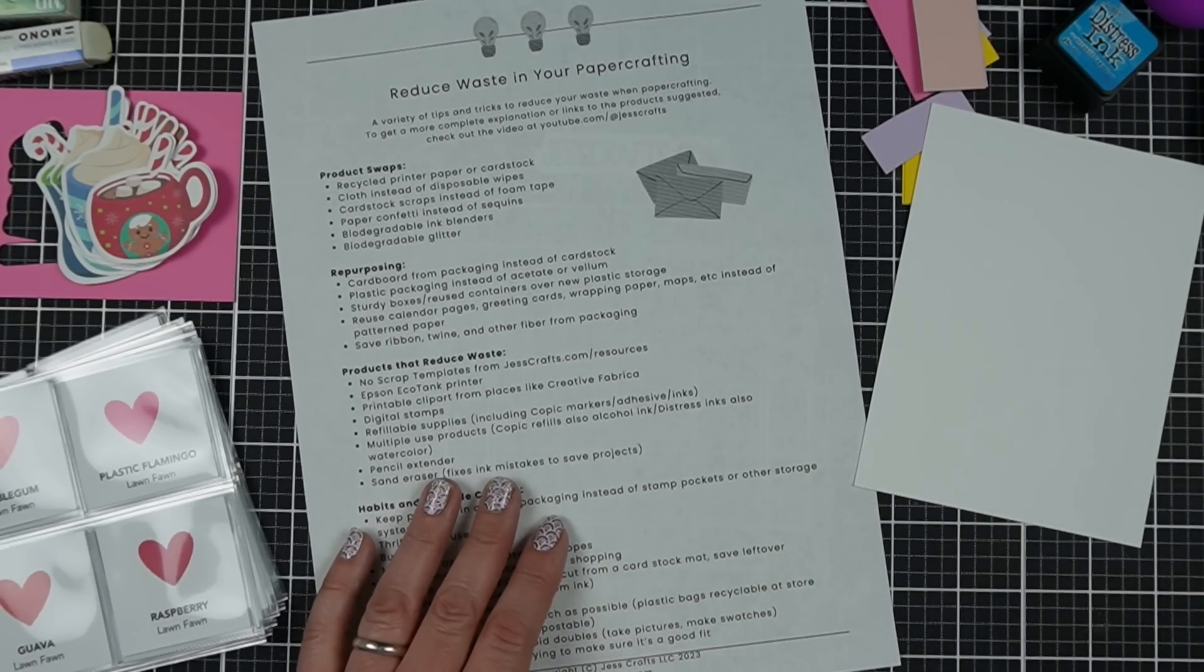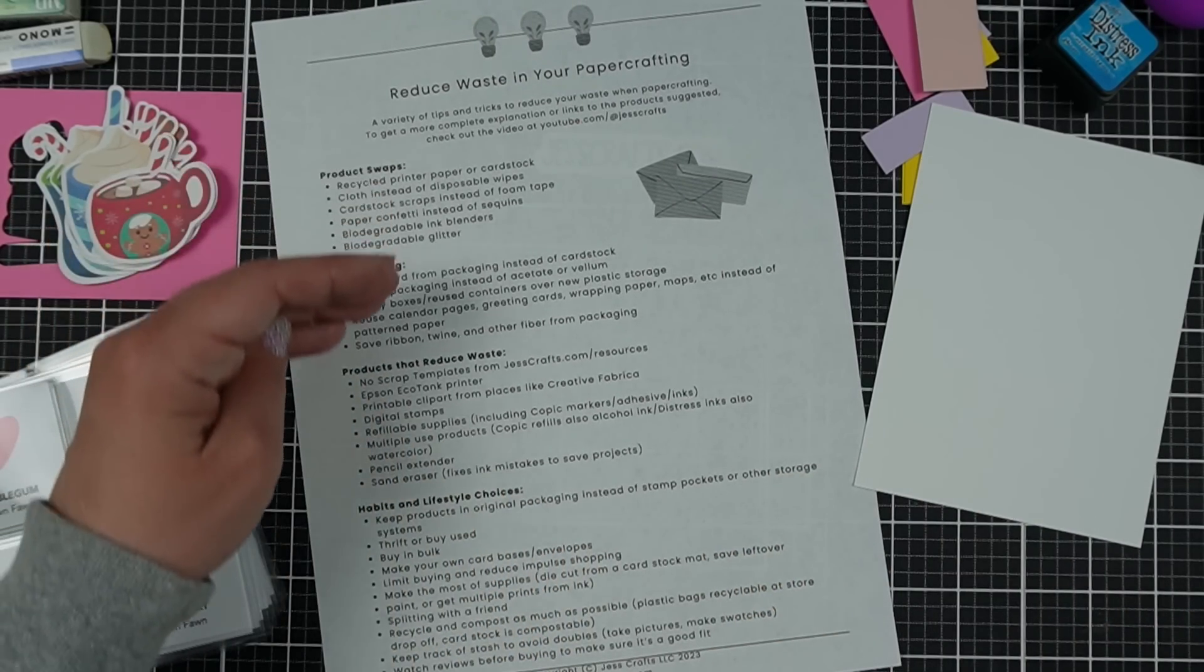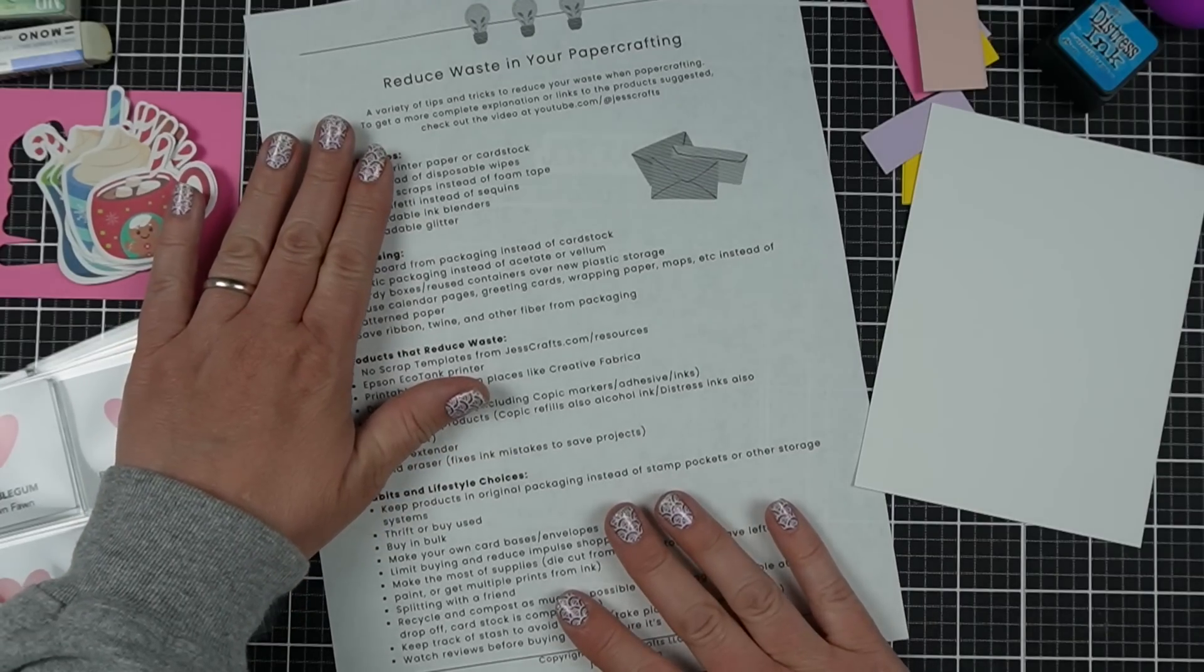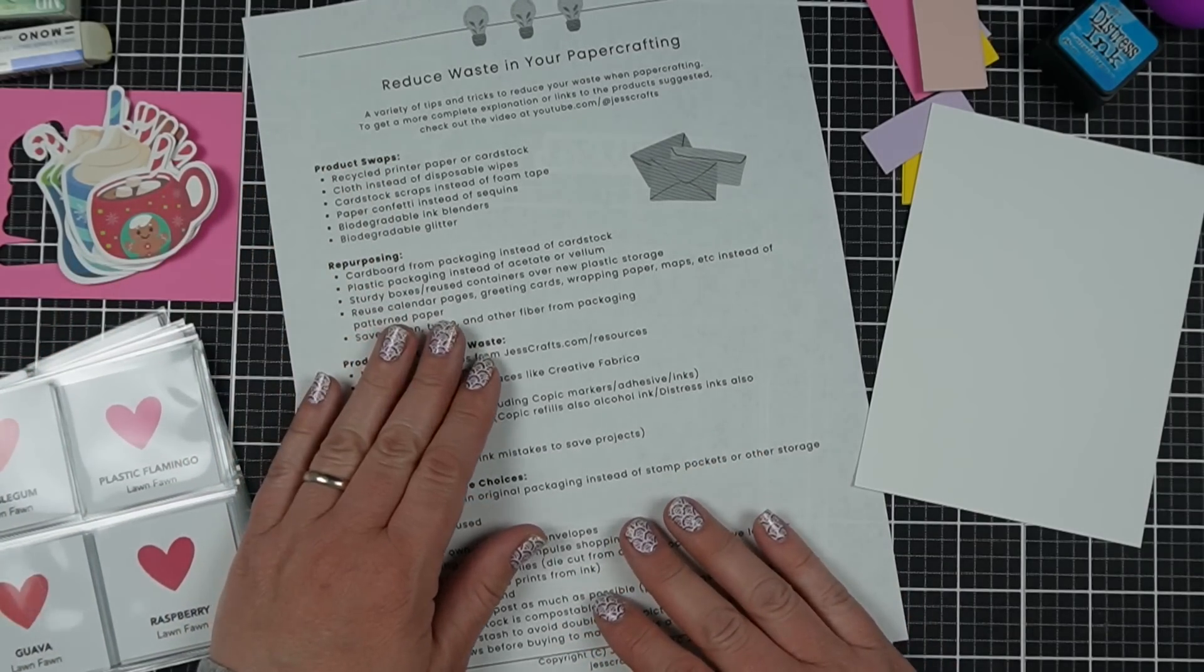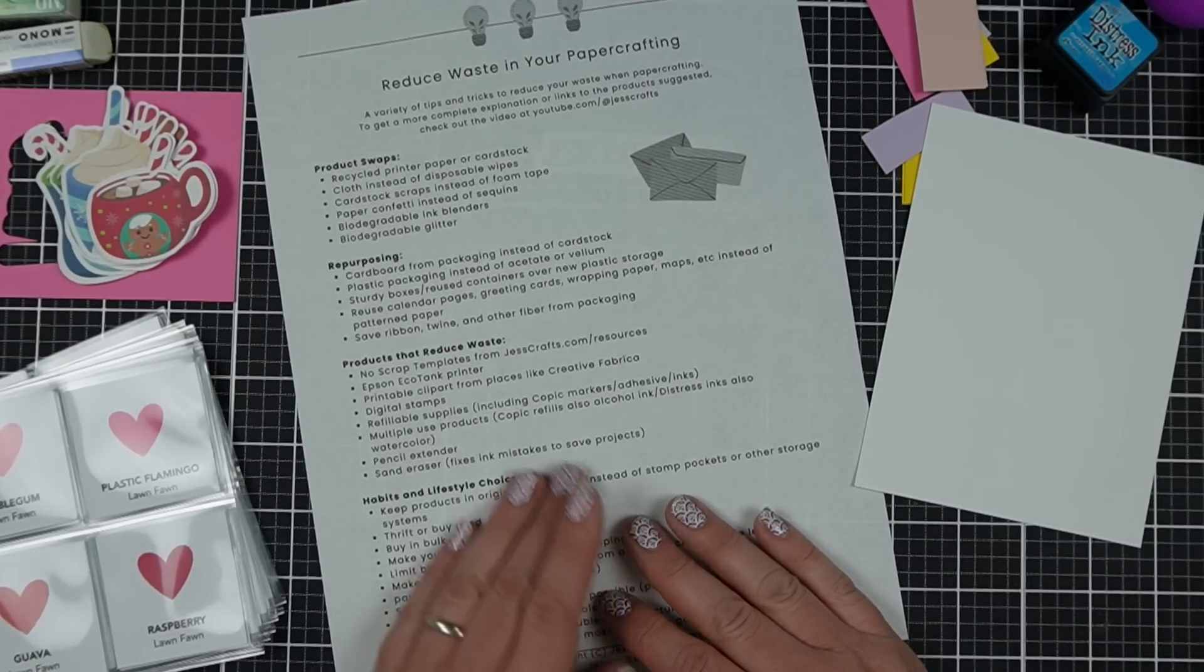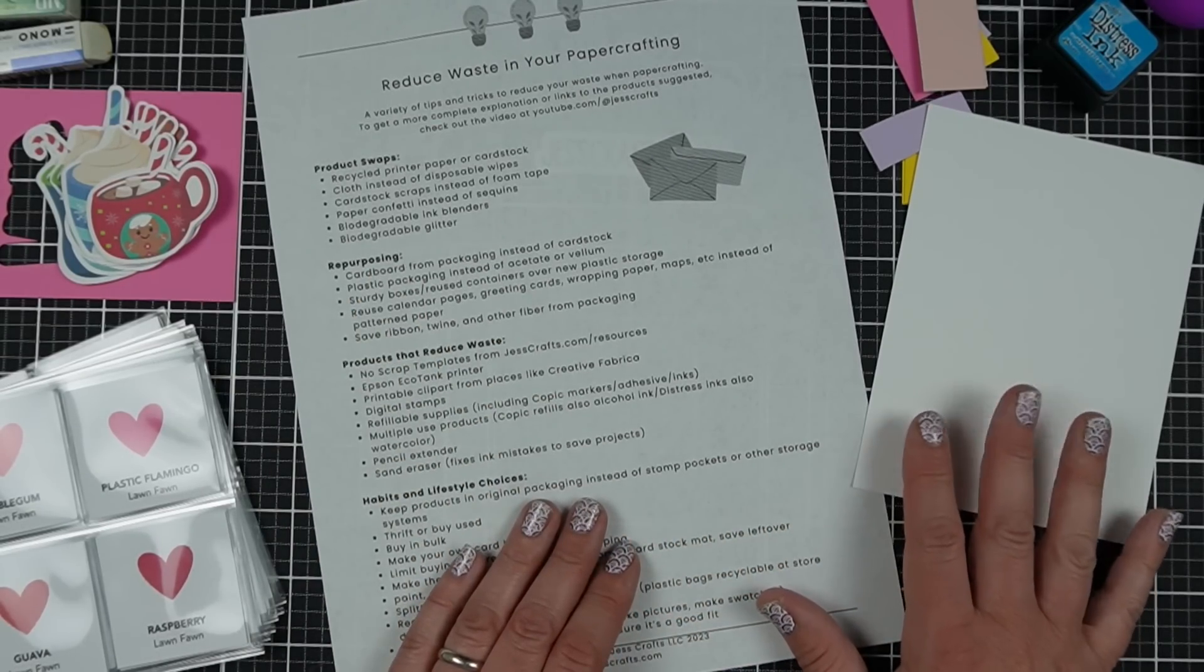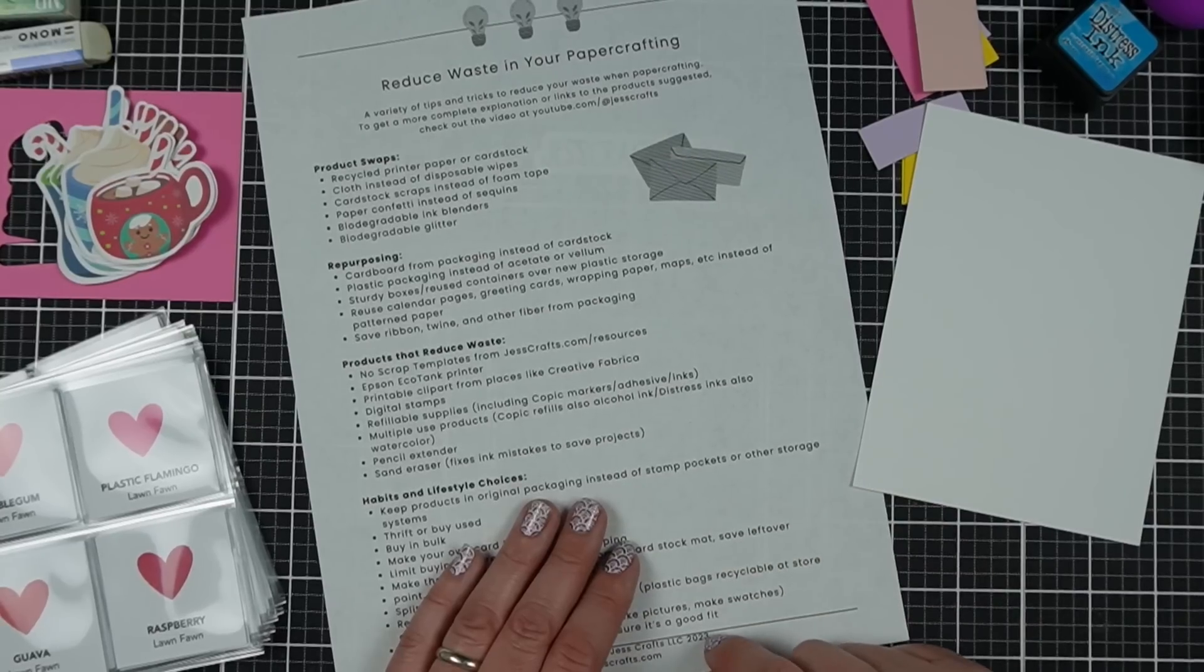So I kind of categorize them as four things. There's going to be a little printable. You of course don't have to print it because that could be wasteful, but as a sort of reference list for you to look over and I'll probably put in a blog post as well. First thing is product swaps.